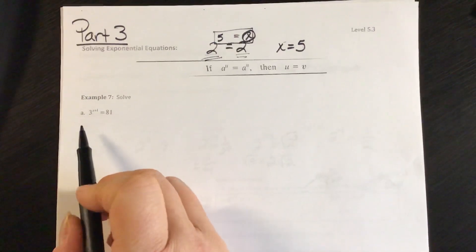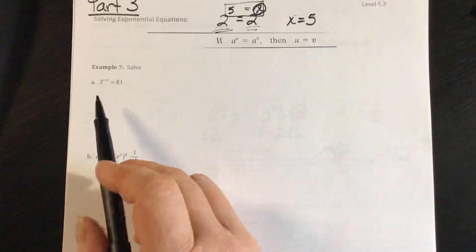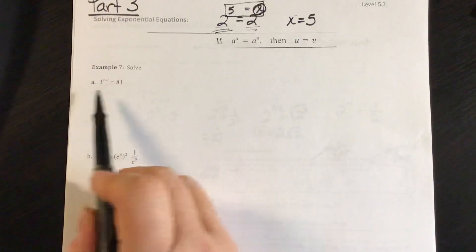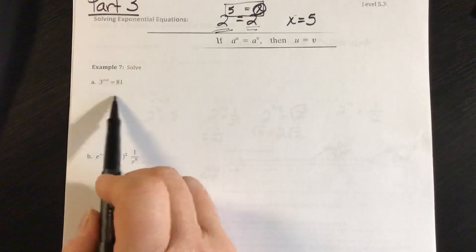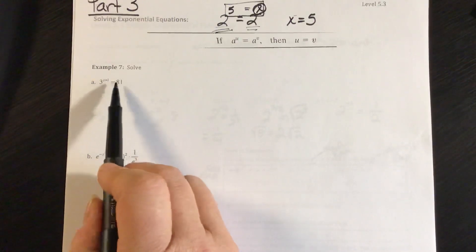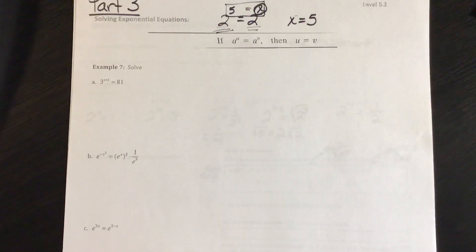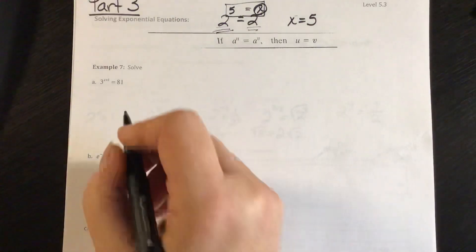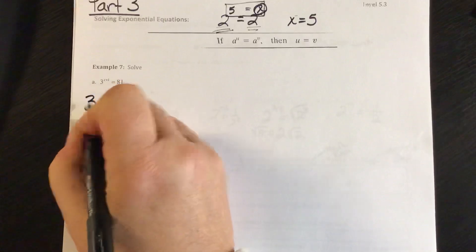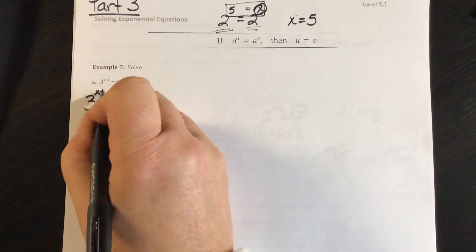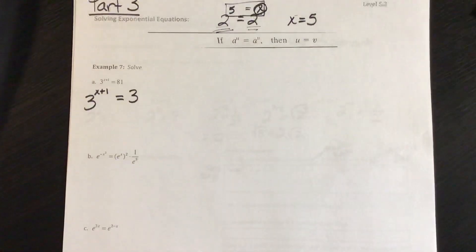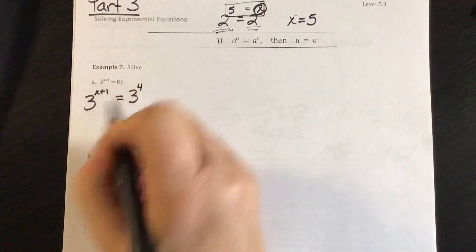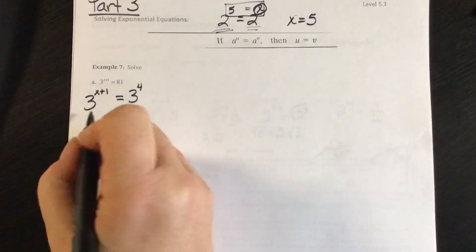So if we notice in part A, our bases are not equal. Here I have a base of 3, and then I have a base of 81. But 81, if we think, is a power of 3. So I can rewrite this statement, keeping 3 to the x plus 1 power the same. And then I'm going to write 81 as a power of 3. And it's 3 to the 4th power that gives us 81.